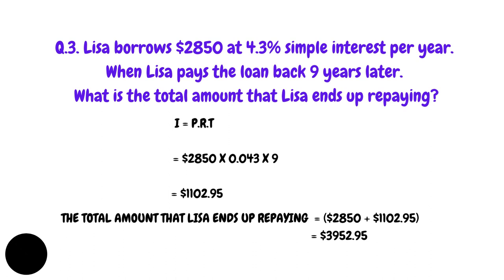Another problem: Lisa borrows $2,850 at a 4.3% simple interest rate per year. When Lisa pays the loan back 9 years later, what is the total amount she ends up repaying? Using I = PRT gives a simple interest of $1,102.95. But we need the total amount, which is the principal plus the interest: $2,850 + $1,102.95 = $3,952.95.